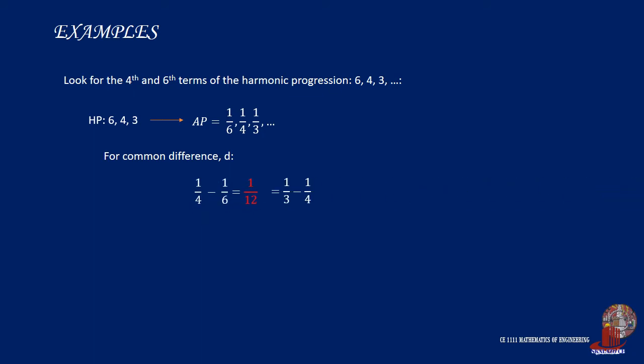For the first example, look for the fourth and sixth terms of the harmonic progression 6, 4, and 3. First, convert the given harmonic progression into its arithmetic sequence, which will yield one-sixth, one-fourth, one-third, and so on. Look for the common difference by subtracting the first term from the succeeding terms. Then note that the common difference should be fixed for all combinations.